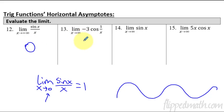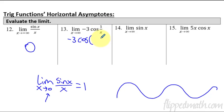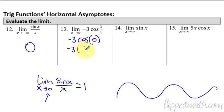For this problem, we treat the fraction first: we have −3 times cosine of 1 over infinity. One over infinity is basically 0, so we have cosine of 0. Cosine of 0 is 1, so the answer is −3.